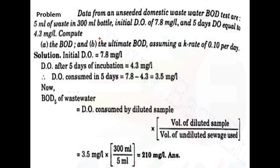Hello friends, today we are going to see the problem related with BOD. The problem is data from an unseeded domestic wastewater BOD test — 5 ml of wastewater in a 300 ml bottle. The initial DO is 7.8 mg per litre and the 5-day DO is 4.3 mg per litre.